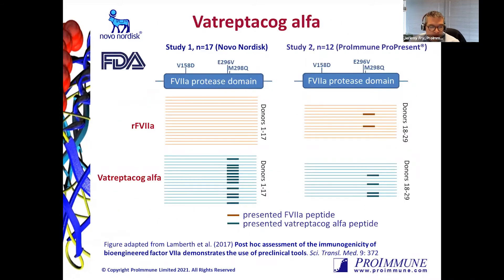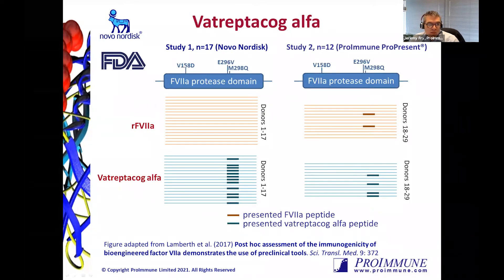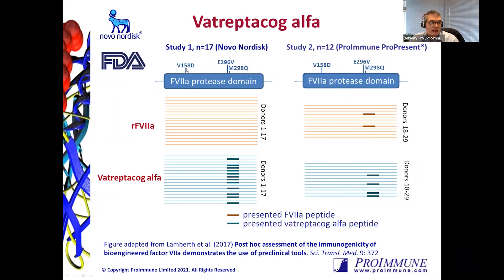A paper was published from Novo Nordisk by Caspar Lambeth in conjunction with the FDA looking at this particular question. It's a great paper because it uses many different approaches. This is just one example of data using a MAPS assay comparing data generated in-house at Novo Nordisk and also at Proimmune. The take-home message is that the N-terminal sequence at valine position 158 mutated to D didn't result in any antigen processing and presentation, but the two C-terminal mutations at positions 296 and 298 resulted in a lot of antigen processing and presentation across donors — completely independent donors from both Novo and Proimmune studies — demonstrating the promiscuity of presentation of this particular region.